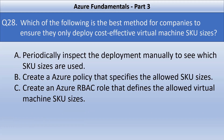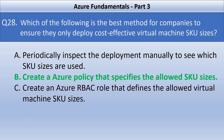Question number 28. Which of the following is the best method for companies to ensure they only deploy cost-effective virtual machine SKU sizes? Your options are: periodically inspect the deployment manually to see which SKU sizes are used; create an Azure policy that specifies the allowed SKU sizes; or create an Azure RBAC role that defines the allowed virtual machine SKU sizes. The correct answer is option B. Azure policy allows organizations to enforce governance and compliance standards across their Azure environments. By creating a policy that specifies allowed VM SKU sizes, companies can ensure only cost-effective options are deployed.